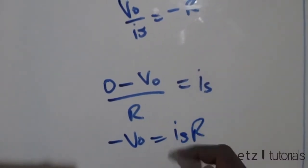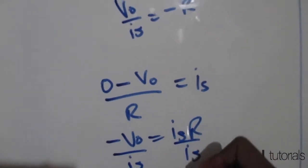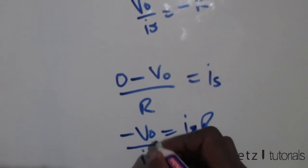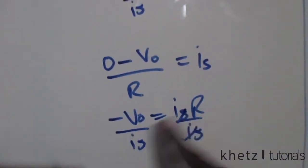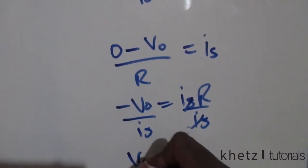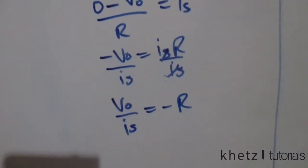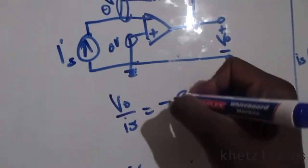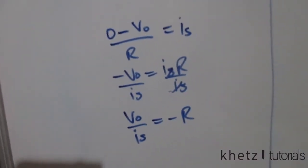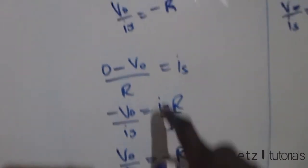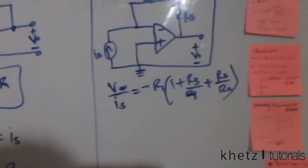Multiplying through by R we have negative vo equals is times R. Dividing both sides by is gives us negative vo divided by is equals R. Then multiplying both sides by negative one we get vo divided by is equals negative R, which is exactly what we were asked to prove. So we are done with this part of the question.